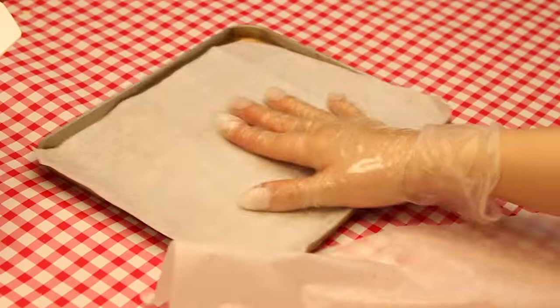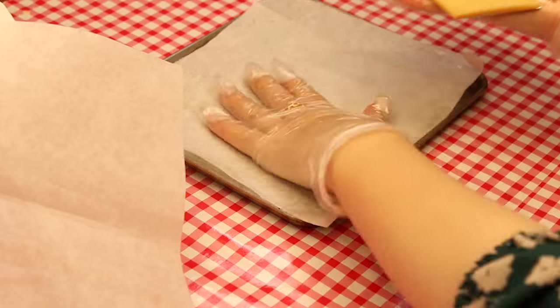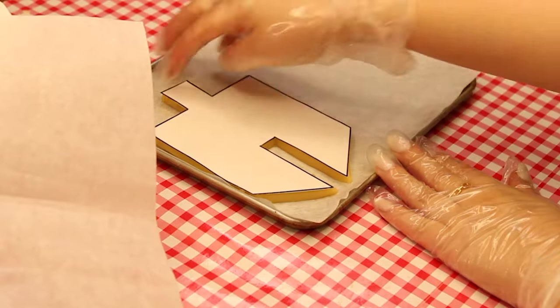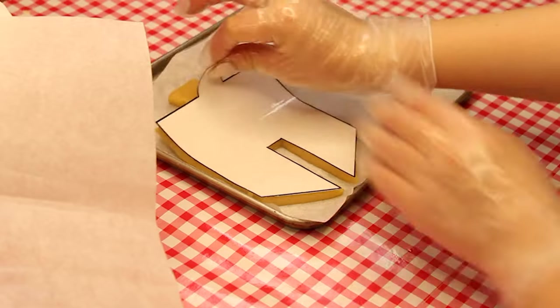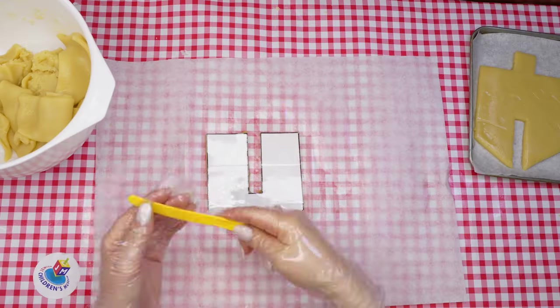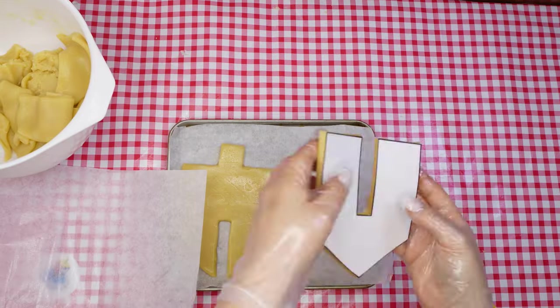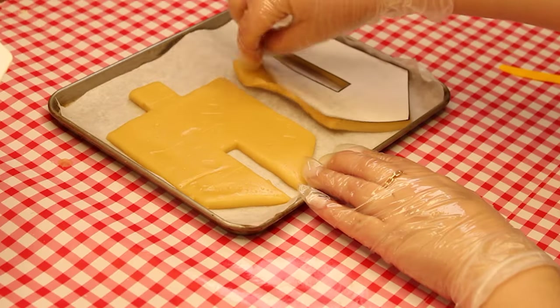Alright, once we have finished cutting out this first dreidel cookie, we will place it on a prepared baking sheet. Carefully peel off the tracer - we wouldn't want to accidentally bake it. Next, we will do the entire process again with the second dreidel tracer, rolling out the dough and cutting out the shape. Place the second cookie on the baking sheet, again carefully peeling off the tracer.